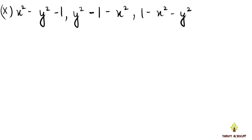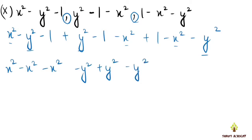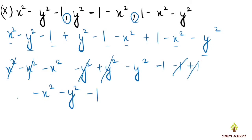The next expressions to add are: x² - y² - 1, plus y² - 1 - x², plus 1 - x² - y². Grouping: the x² terms, y² terms, and constants, applying minus signs where needed. After combining all like terms, we get the final simplified answer.